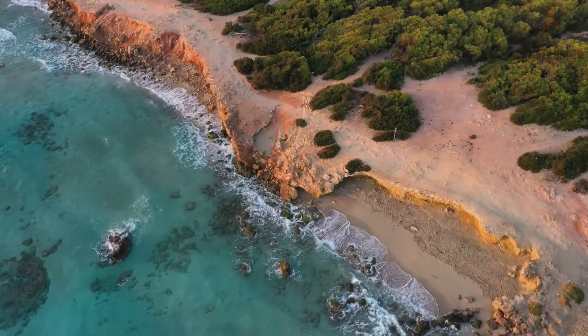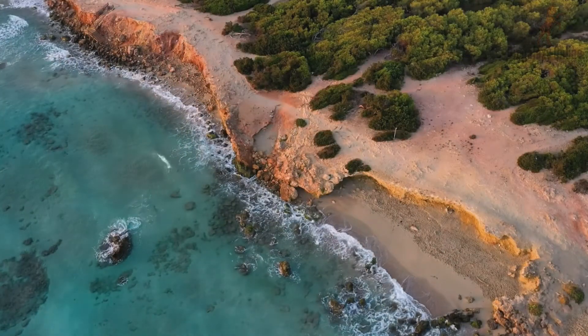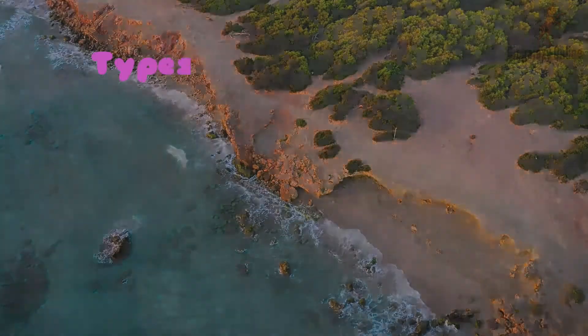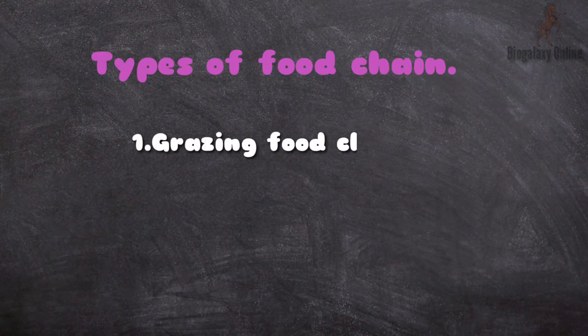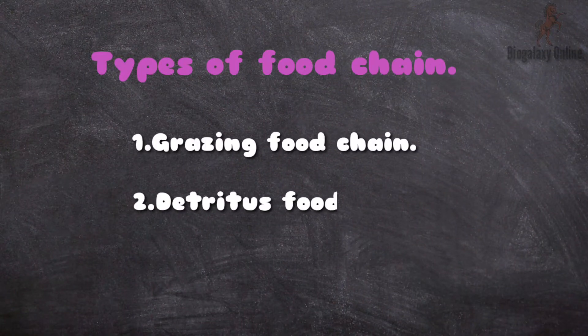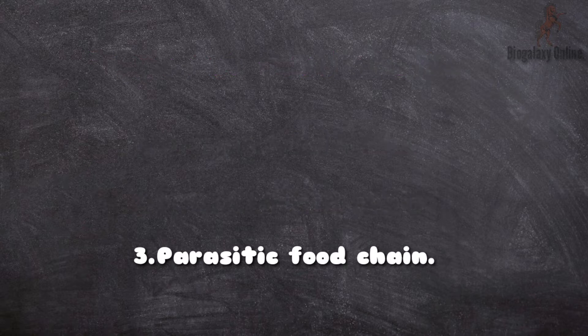Food chains are classified into three different types: the grazing food chain, the detritus food chain, and the parasitic food chain.